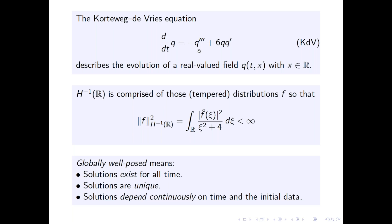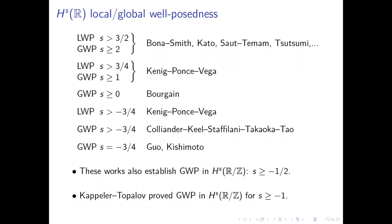Ever since Korteweg and de Vries introduced their equation it has been studied by mathematicians and physicists alike. One of its remarkable features is that it is the first PDE discovered to be completely integrable, mainly thanks to work by Gardner, Green, Kruskal, and Miura, who were physicists at Princeton Plasma Physics Laboratory. Because it is so simple-looking, KdV has acted as a testing ground for PDE techniques — whenever someone came up with a new idea for proving global well-posedness for a dispersive PDE, they tested it on KdV first.